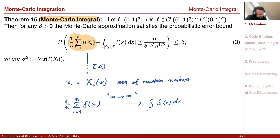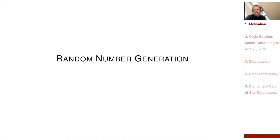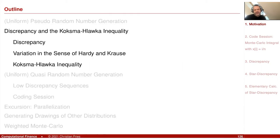A nice result was that this actually works also in higher dimensions. So now the question is how to generate this sequence xi. We had a first session on random number generation, where we looked at so-called pseudo random number generators — algorithms that generate some kind of sequence that really looks random.